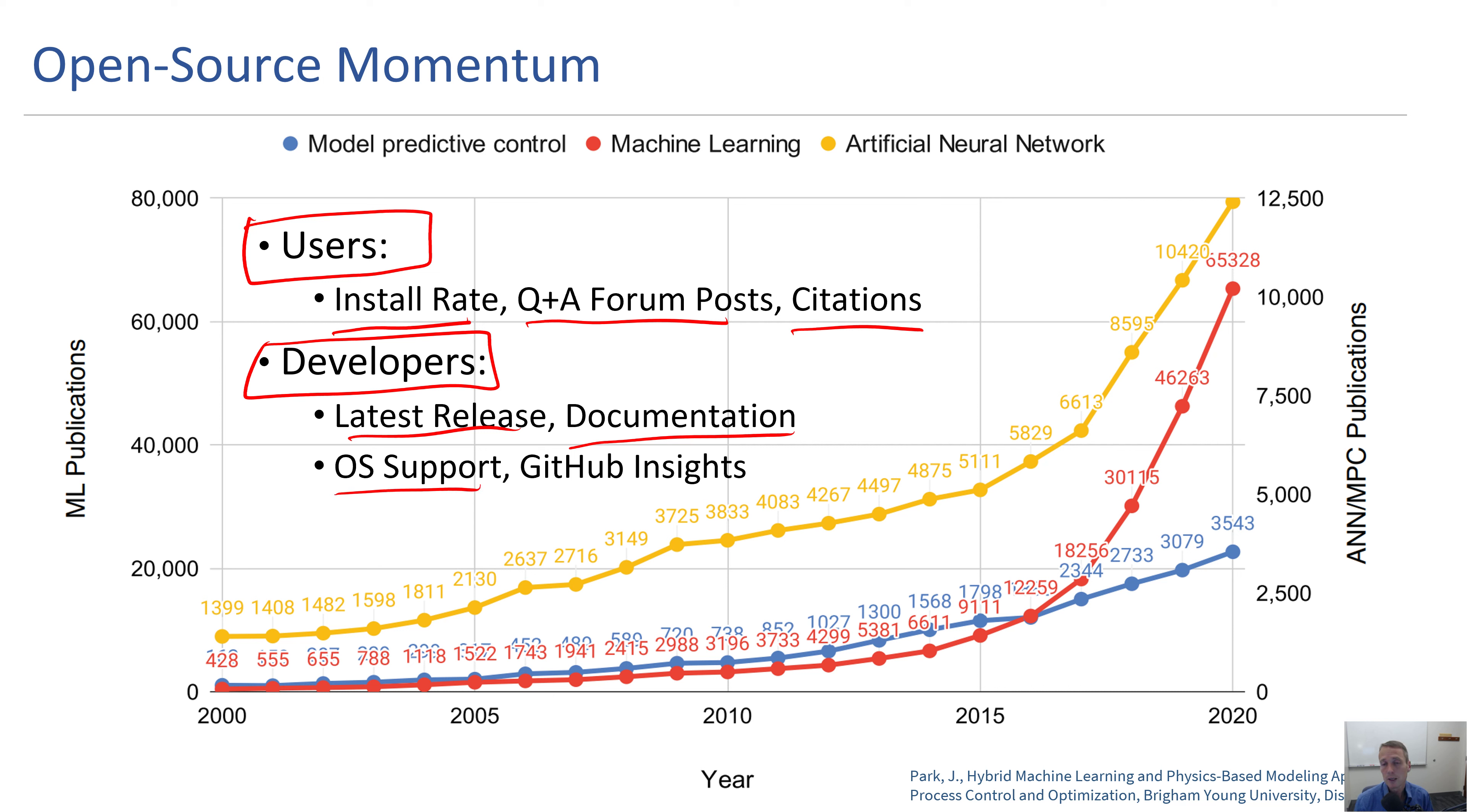Can it also handle the complexity that you need, OS support across all major platforms, and GitHub insights like number of commits, the activity of the community supporting this package. We see momentum in things like machine learning publications, artificial neural networks, and MPC publications really taking off in the last few years.